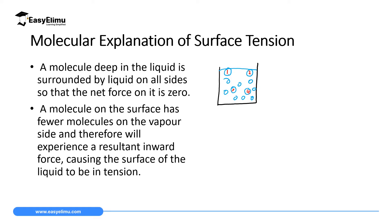Molecule one will receive a downward force and will be attracted downward. Molecule three will receive a force from all molecules surrounding it, including molecule four. Molecule four will also receive a force of attraction from the molecules surrounding it. Now look at molecules one and two — they are only receiving a force downward.